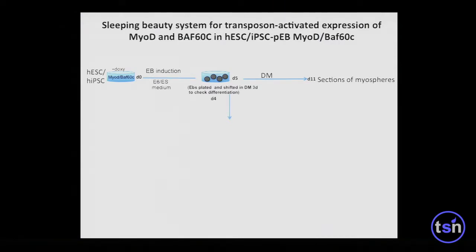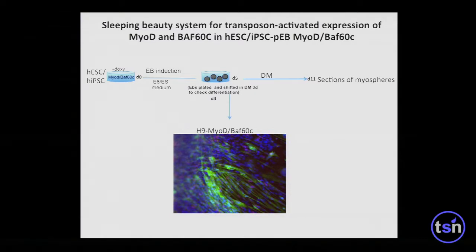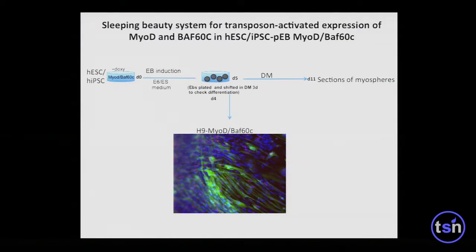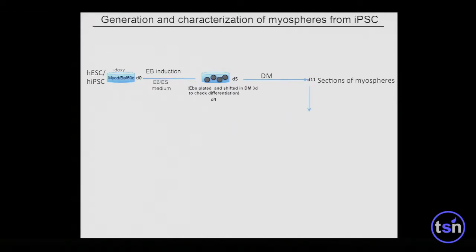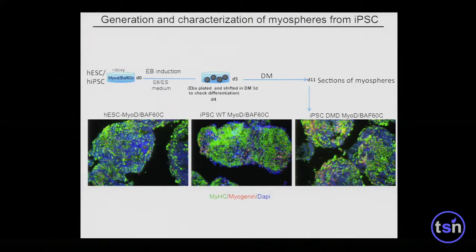Sonia used human embryonic stem cells and iPS cells in parallel to check whether the same process could be recapitulated from iPS cells. The answer was yes. The efficiency was much higher because she moved to a Sleeping Beauty transposon-based system to express MyoD and BAF60C, which allows far more potent gene expression. With all cells expressing both MyoD and BAF60C, she used the same technology to form myospheres and generate contractile 3D myospheres from iPS cells of normal individuals as well as from Duchenne muscular dystrophy patients.